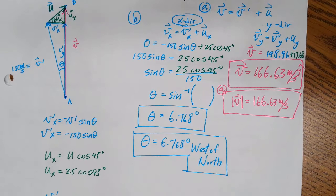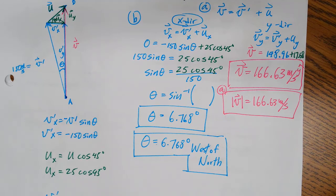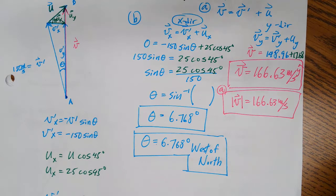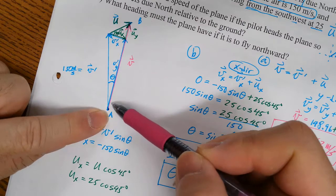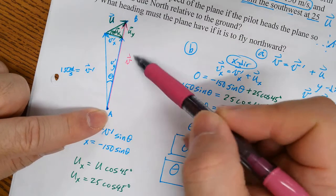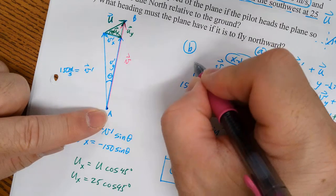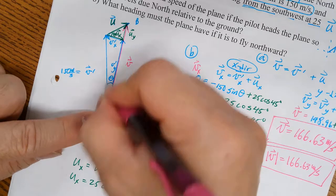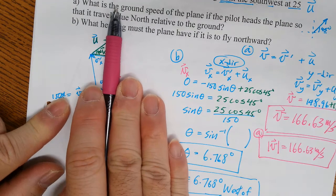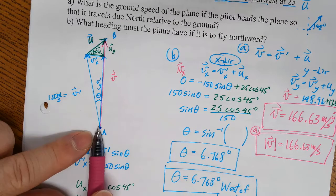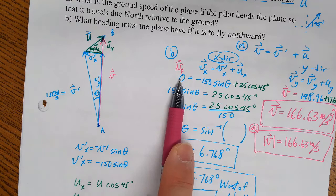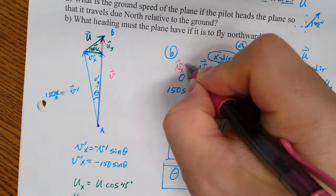Student question: why is v_x equal to zero? Since I want to fly straight north, my resultant vector v doesn't have any x component at all. I'm going straight north and I don't have any x component of v.